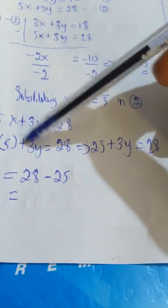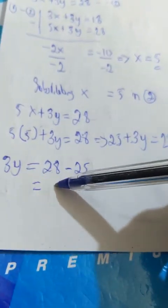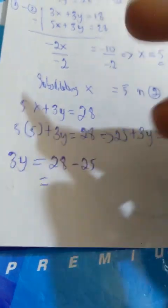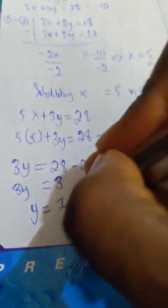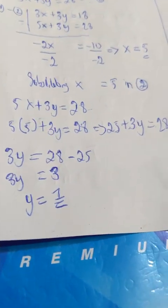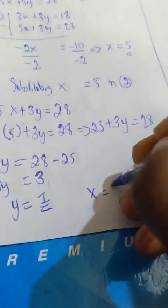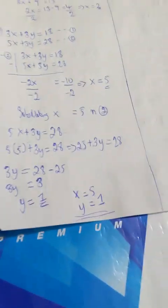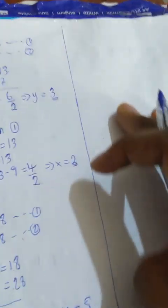Substituting x equal to 5 into equation two, 5 times 5 is 25, plus 3y equal to 28. So 3y equals 28 minus 25, which is 3, and y equals 1. For this equation, x equals 5 and y equals 1.